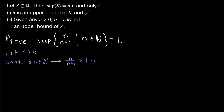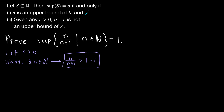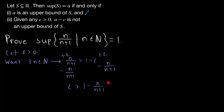We need it to be equivalent so we can go the other direction when we actually write the proof. Obviously we can't start with the conclusion, but this is really the work part of the proof, and the rest is just writing it in the opposite order. We want to solve this inequality for n to see what condition n has to satisfy. Adding epsilon to both sides and subtracting n over n plus 1 from both sides gives us epsilon is greater than 1 minus n over n plus 1.